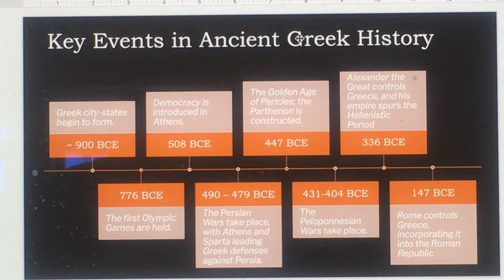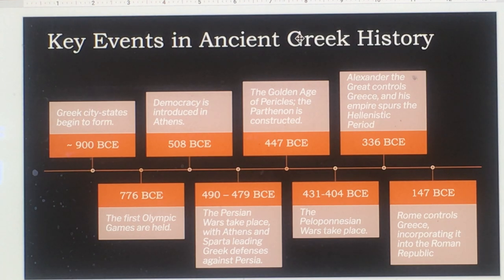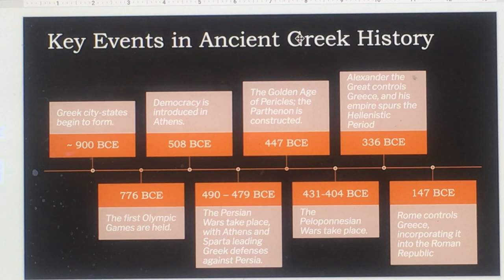In 447, we're looking at the Golden Age of Pericles and the Parthenon is constructed. From 431 to 404 we have the Peloponnesian Wars. In 336 BCE, Alexander the Great controls Greece and his empire spurs the Hellenistic period. In 147 BCE, Rome controls Greece, incorporating it into the Roman Republic.